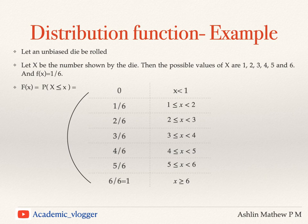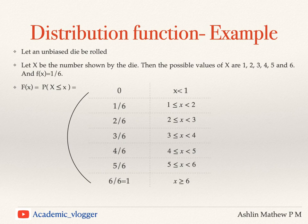In a similar manner, when x is greater than or equal to 6, we will have P(X ≤ 6). In that case we will have all events 1, 2, 3, 4, 5 and 6, and therefore that probability value will be 1.